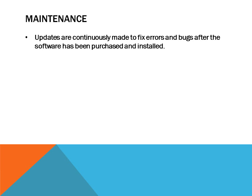The final stage is maintenance. Updates are continuously made to fix errors and bugs after the software has been purchased and installed. These are ongoing updates that end users or clients make to ensure the system functions properly and that any bugs or errors can be continuously fixed or patched. Maintenance usually takes up a majority of a project's budget because it's ongoing for a large amount of time and requires many resources.